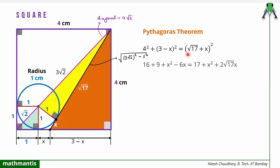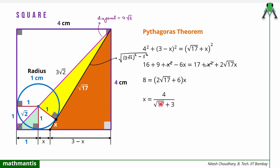The hypotenuse is √17 + x, so: base² + perpendicular² = hypotenuse² gives 16 + (3 − x)² = (√17 + x)². Expanding: 16 + 9 + x² − 6x = 17 + x² + 2√17·x. The x² terms cancel out. Bringing 17 to the left: 25 − 17 = 8 = 2√17·x + 6x. Taking 2 common on the right: 4 = (√17 + 3)·x. Therefore x = 4/(√17 + 3).